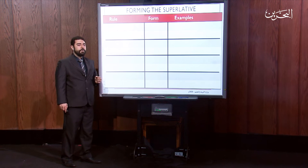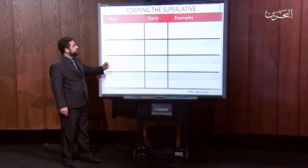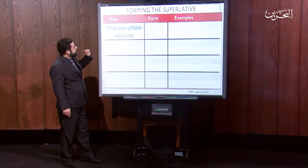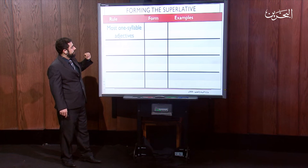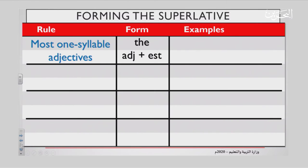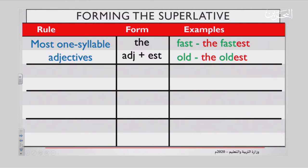Now, form of the superlative. We have a rule, we have form, we have examples. The first rule is: most one-syllable adjectives — you just add EST. So, what is a one-syllable adjective? For example, fast. Fast is a one-syllable adjective, so you add the, then write the adjective fast, and then EST — the fastest. Just like that: old, the oldest.